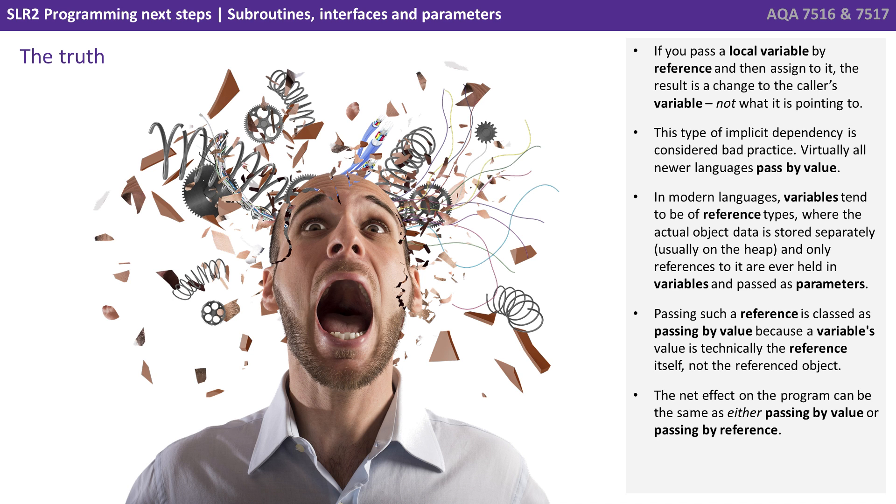In modern languages, variables tend to be of reference types, where the actual object data is stored separately, and only reference to it ever held in variables and passed as parameters. Passing such a reference is classed as passing by value, because the variable's value is technically the reference itself and not the referenced object. The net effect on the program can be the same as either passing by value or passing by reference.